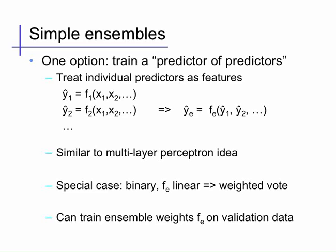Even more generally, we could take these predictions as being features of some other predictor. So we simply learn our predictors F1 through Fk as best we can, and then combine them using some entirely new predictor Fe — F ensemble — that takes the output of those initial predictors and tries to use them to produce a better prediction of Y-hat. This is quite similar to the idea in multilayer perceptrons, where we have one layer of predictors producing features for another layer of prediction, except that unlike multilayer perceptrons where all layers are trained simultaneously, here we train the individual predictors once and then combine them using a post-processing prediction step.